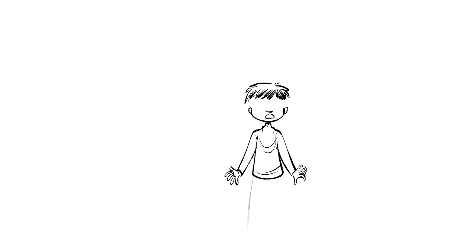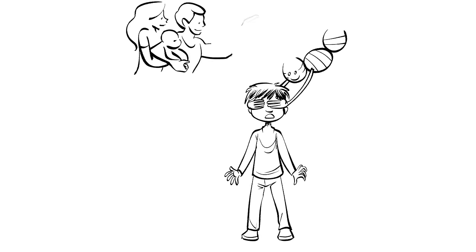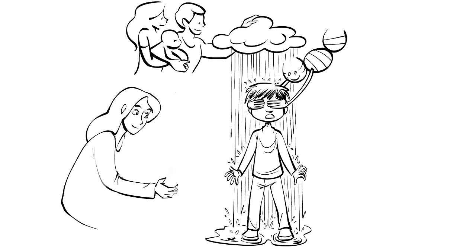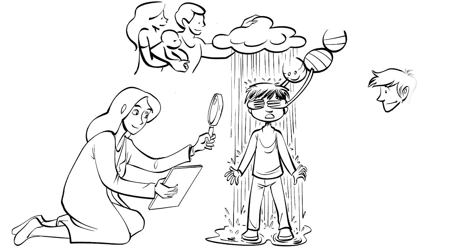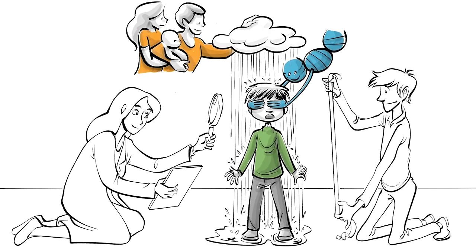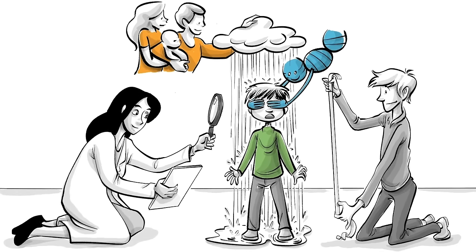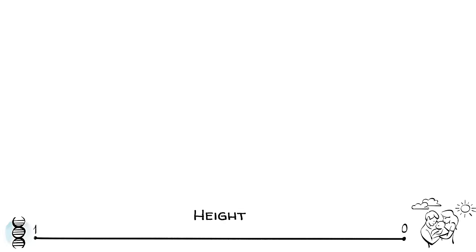How complex the interaction between genes and environment really is becomes clear when we look at something as seemingly straightforward as IQ and height. First, let's examine height.